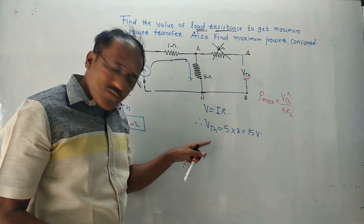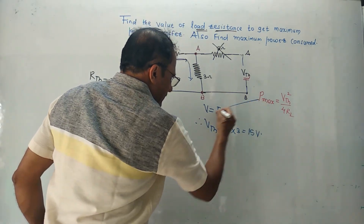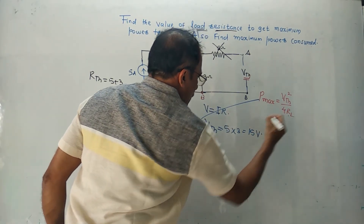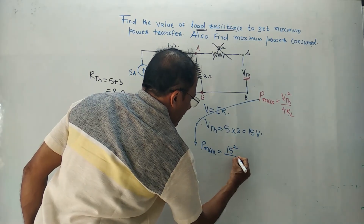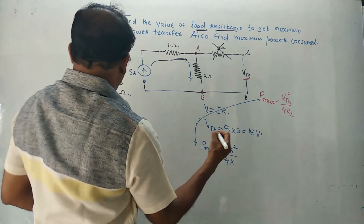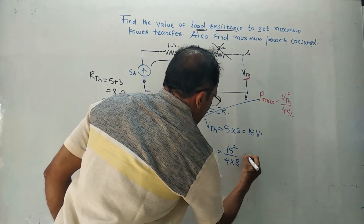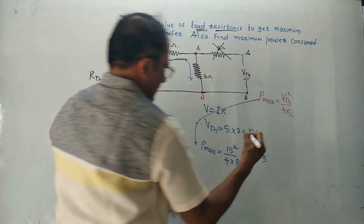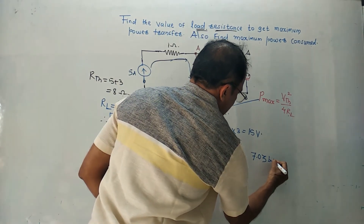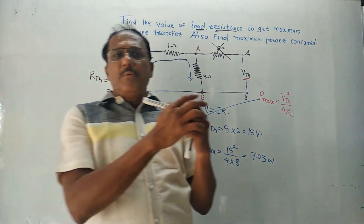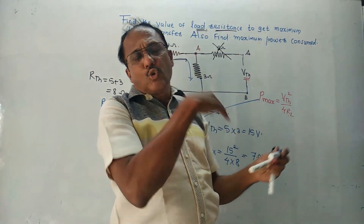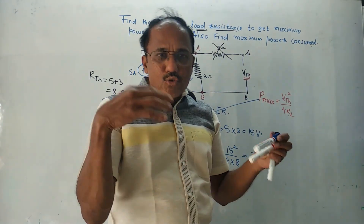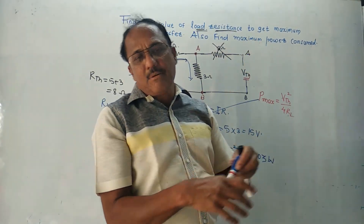Now for the last part, simply put the values into the formula: P_max equals VTH squared upon 4RL. VTH is 15, so P_max equals 15 squared upon 4 into 8. Doing this calculation gives 7.03 watts. As far as maximum power transfer problems are concerned, there are two possible variations: calculate RL only, or calculate RL along with the maximum power P_max.